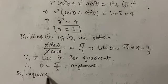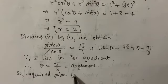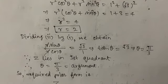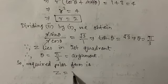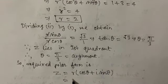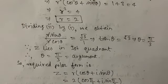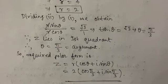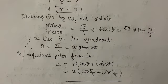The required polar form is z = 2(cos π/3 + i sin π/3). This is our complete solution — we converted from Cartesian form to polar form. If we have a polar form and want to convert to Cartesian form, just substitute the values of cos θ and sin θ and simplify.